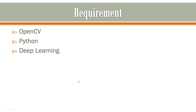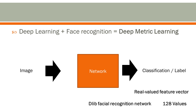Now talking about deep learning — once we combine deep learning with face recognition technique, we call this as deep metric learning. We'll talk about what deep learning is, what methods we use, and how we apply the face recognition techniques. But as of now, once you combine deep learning and face recognition, we call this deep metric learning. Let's understand this — this is your neural network.